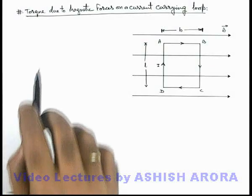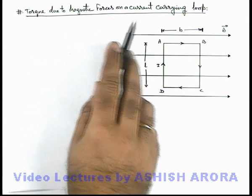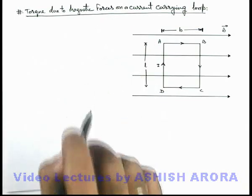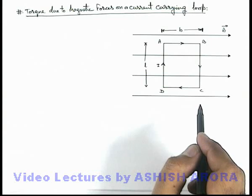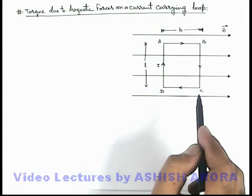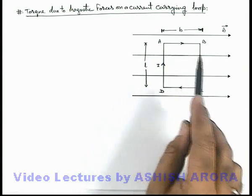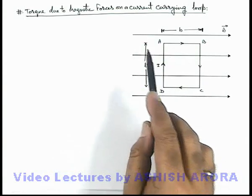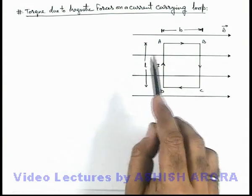Let us now study the torque due to magnetic forces on a current carrying loop in a magnetic field. Here you can see a uniform magnetic field in which a rectangular coil ABCD is placed, carrying a current i in a clockwise manner. The dimensions of the loop are given as l and b.